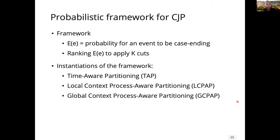The core idea of our probabilistic framework is to define a probability function that returns for every event the probability that it is a case-ending event — that is, where we should insert a cut. Once this function is defined, we partition by cutting at the highest probabilities. We instantiate the framework in three different ways, starting with the Time Hour Partitioning (TAP), which is the baseline approach already known to the process mining community.